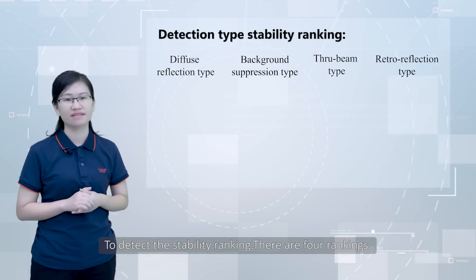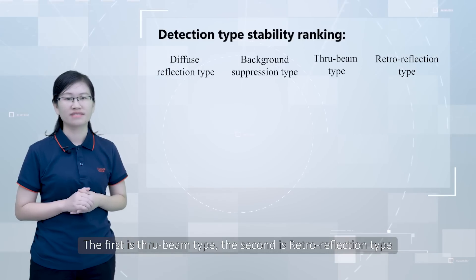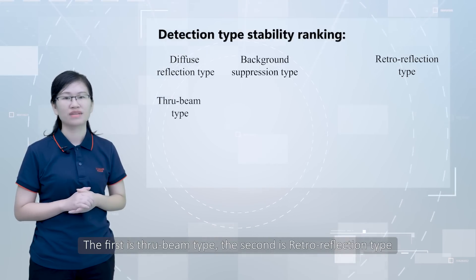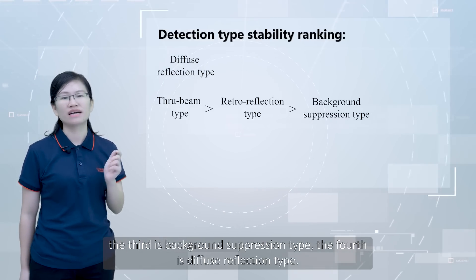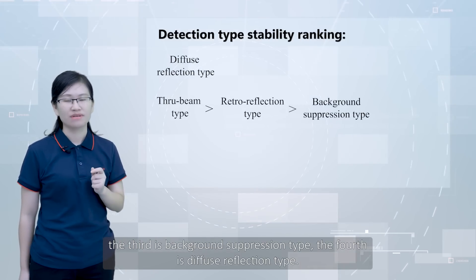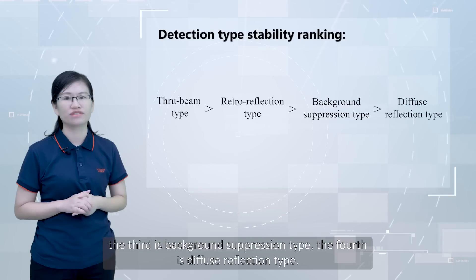To detect the stability ranking, there are four rankings. The first is the through-beam type. The second is the retro reflection type. The third is background suppression type. The fourth is diffuse reflection type.